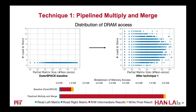Here, we visualize the rounds of store and load of partial matrices after applying pipeline multiply-and-merge. Because we do not have the row-wise ordering as in Outer Space, the rounds are larger than the baseline and the DRAM accesses are also increased. But this technique is actually necessary because it enables the following several optimizations.